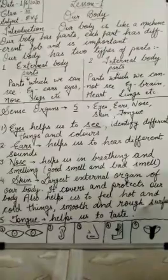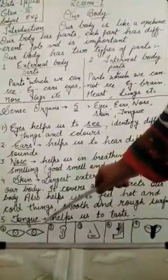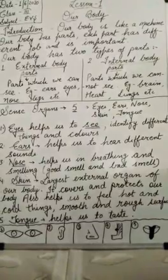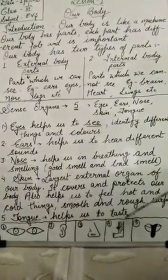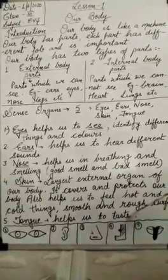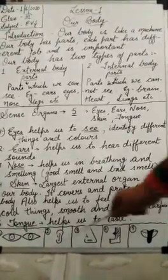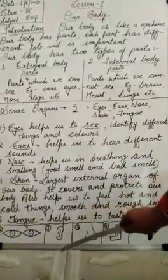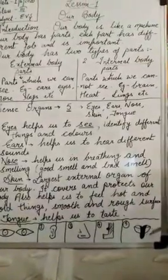And the last sense organ is tongue — 'tongue' matlab humari jeebh, jo humare mouth ke andar hoti hai. Humare mouth mein teeth hote hain aur tongue hoti hai. Teeth jo hain woh khaane ko chew karne mein — yaani chabane mein — help karte hain. Aur humari tongue jo hai woh taste karne mein help karti hai. Hum different tastes — salty, bitter yaani kadwa, sweet yaani meetha, aur sour yaani khatta — yeh jo taste hain woh humari tongue se pata chalte hain. Maine paancho sense organs ko draw kar rakha hai — eyes, ears, nose, skin, aur tongue.